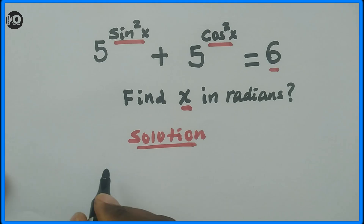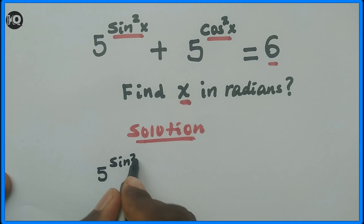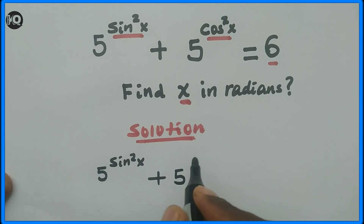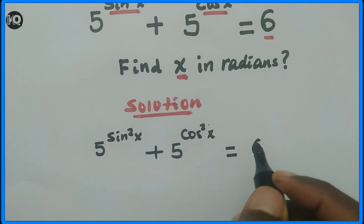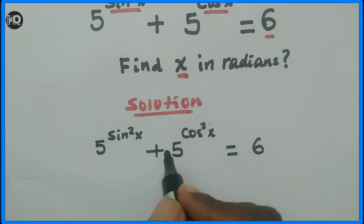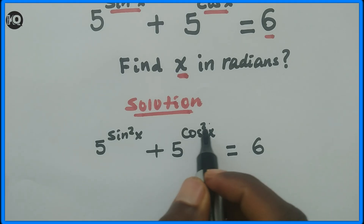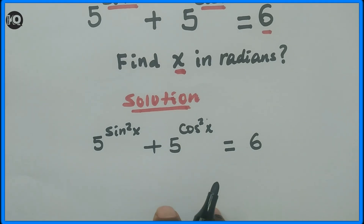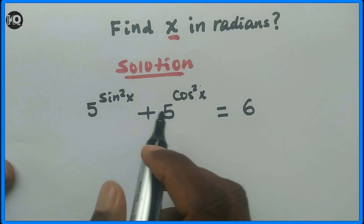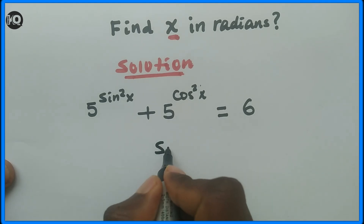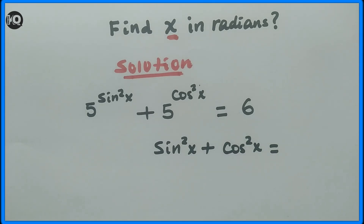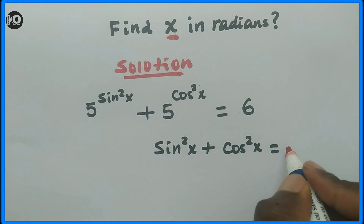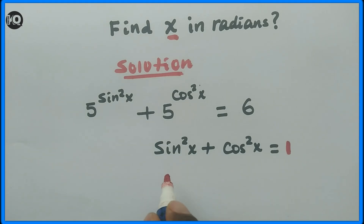We have the given problem: 5 to the power of sine squared x plus 5 to the power of cosine squared x equals 6. We have sine squared x and cosine squared x. I want to express cosine squared x in terms of sine squared x. From the trigonometric identity, we know that sine squared x plus cosine squared x equals 1.